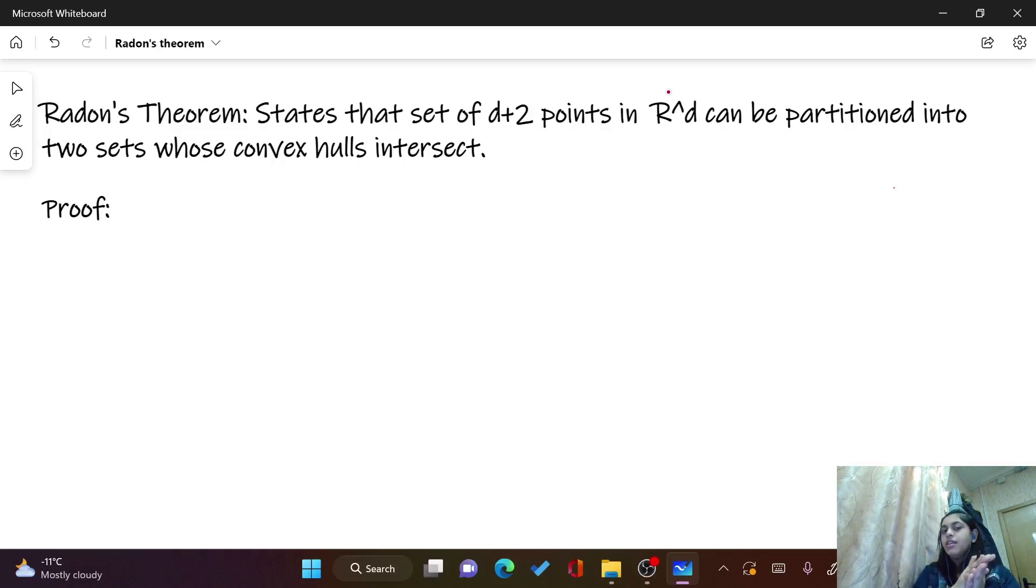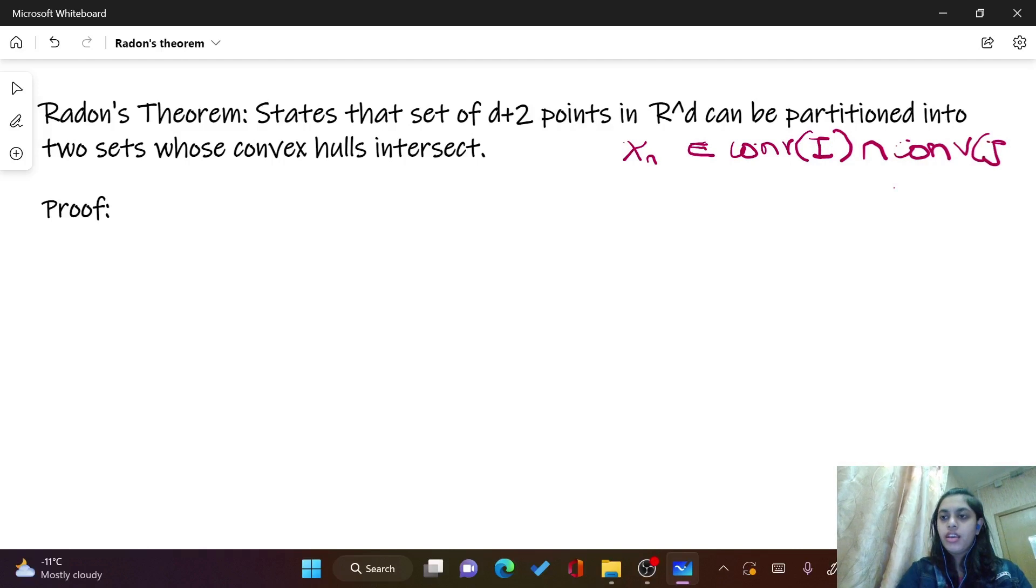This is what we have to prove: that somehow we have to prove that there exists some x_intersection, which belongs to the convex hull of the partition set I and the convex hull of J. This is what we have to prove. This was just a general idea, let's look at the proof.